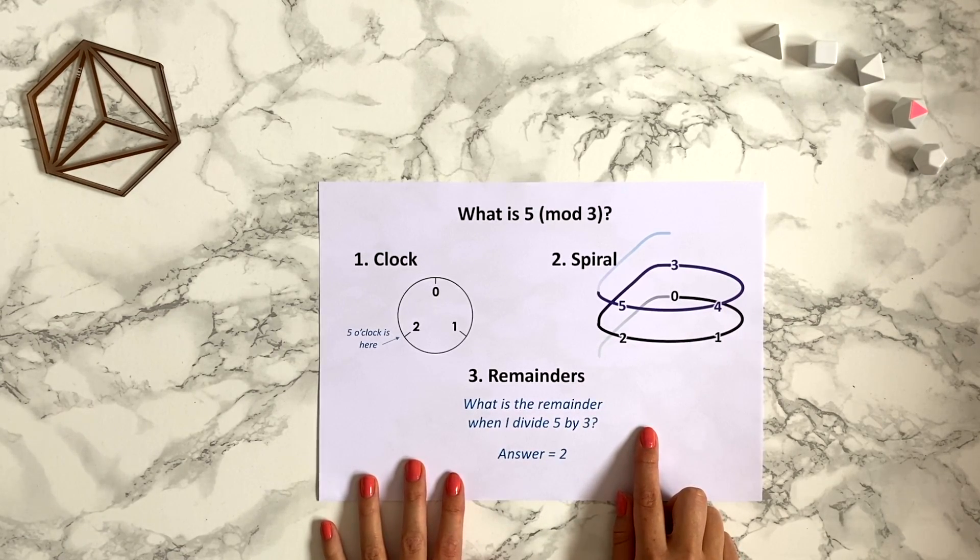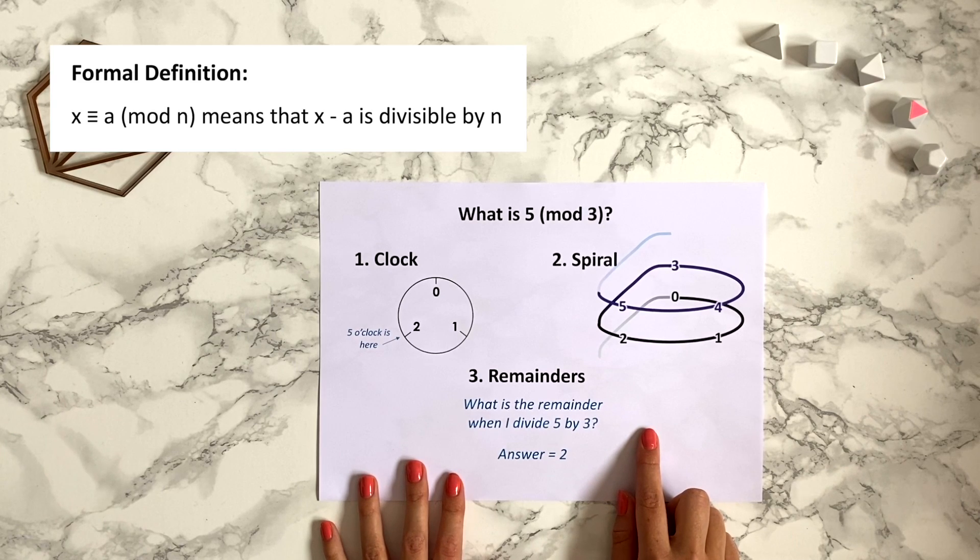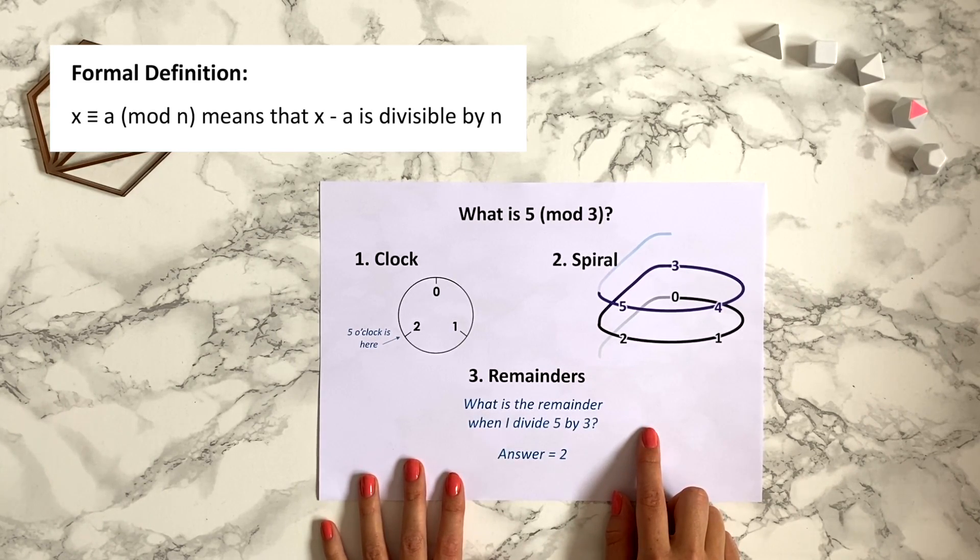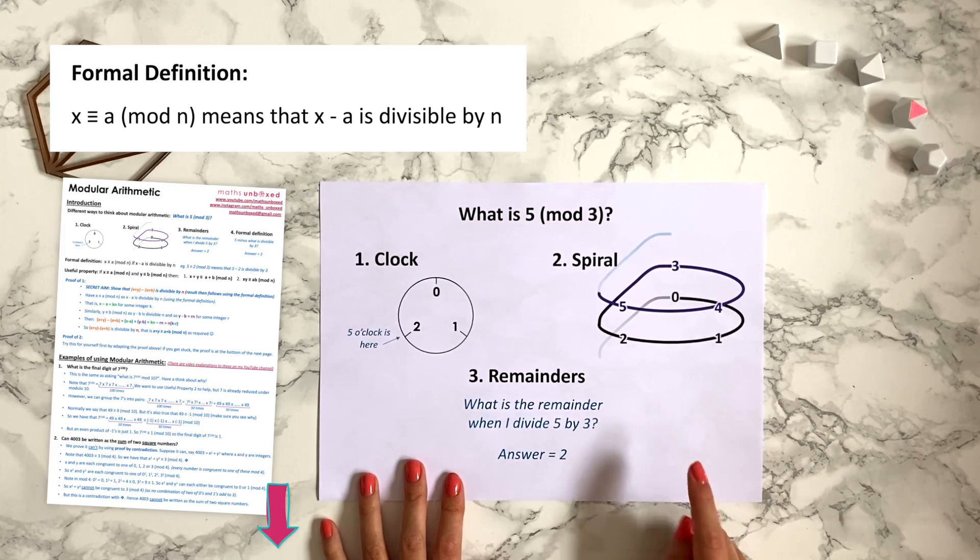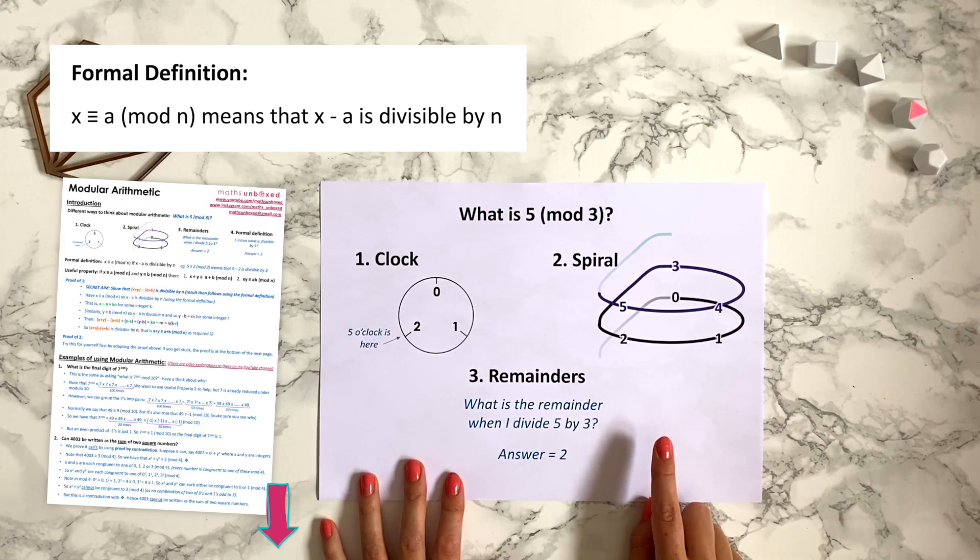There's actually a fourth way of thinking about modular arithmetic that can be useful to know, and that's the formal definition. This is useful when proving things about modular arithmetic but is maybe less helpful when you're actually trying to do calculations, so I won't go over it now but I'll provide a link in the description below to a handout I made that has it on.